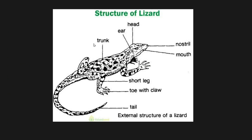The lizard has a typical reptile structure with pentadactyl limbs — four limbs, each with five fingers. However, one reptile is an exception and does not have pentadactyl limbs. Can you guess which reptile that is? You can comment the answer.